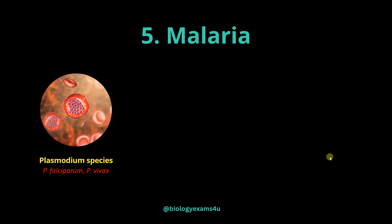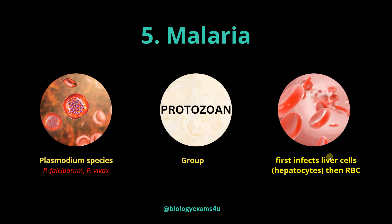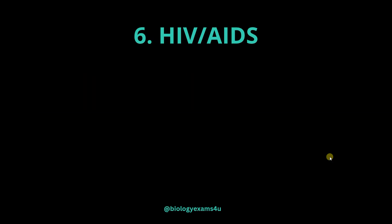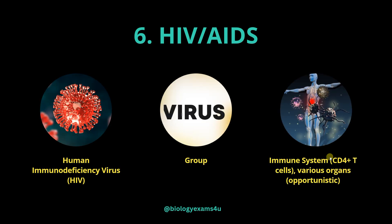The two common Plasmodium species are Plasmodium falciparum and Plasmodium vivax, belonging to Protozoa. It first infects liver cells or hepatocytes, and later red blood cells (RBCs). HIV, or AIDS — Acquired Immunodeficiency Syndrome — is caused by HIV virus, which primarily affects the immune system, especially T cells, and later affects various organs.